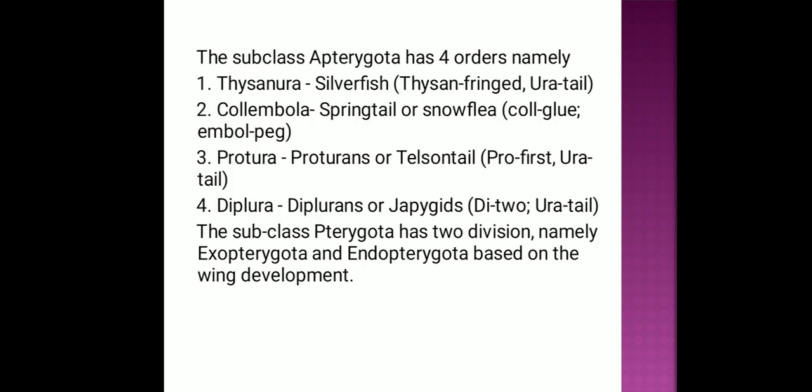Order Protura: about 170 species present worldwide. These insects are very minute in size, primitive and wingless, showing little metamorphosis. Abdomen has 11 segments with a pair of small appendages on the first three segments. No antennae and no eyes. Tail filament is absent; Malpighian tubules are present but small.